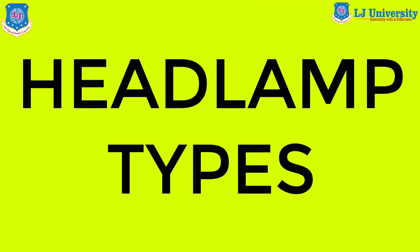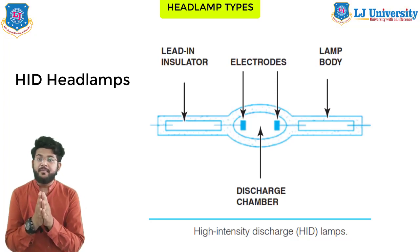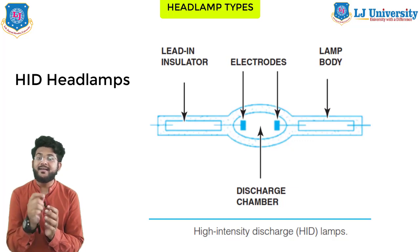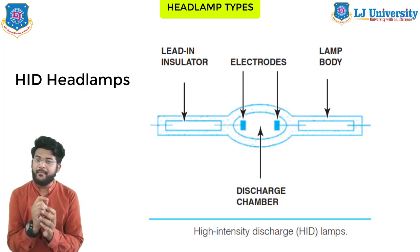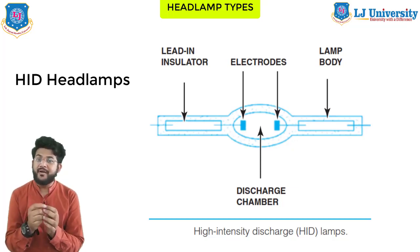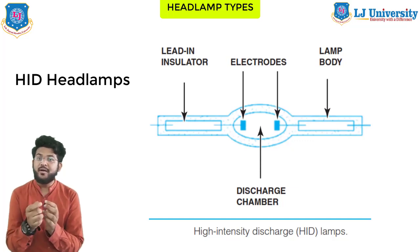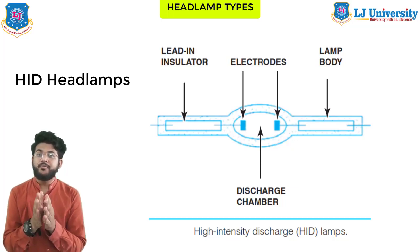What is a high intensity discharge lamp? The latest headlight development is the high intensity discharge, that is, HID lamp. These headlamps put out three times more light and twice the light is spread on the road than conventional halogen headlamps, which we discussed in the previous session. They also use about two-thirds less power to operate and will last two to three times as long.